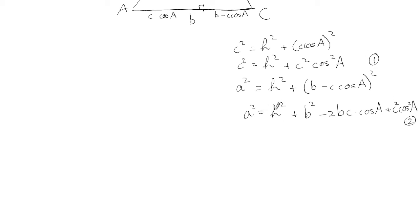And what we want to do is get rid of the h's because there's no h in the cosine rule. And so what we could do, we could do substitution. So I could solve this equation for h squared and then sub it in there. But what I might do is use elimination. So I will take this second equation and subtract the first one from it because that's gonna get rid of the h's.